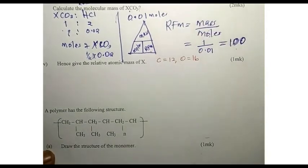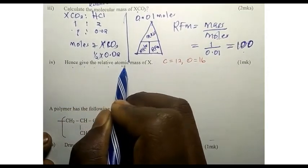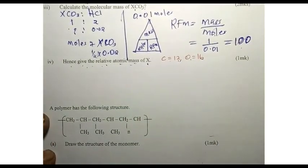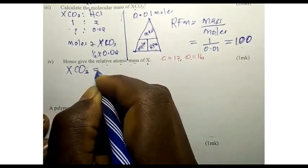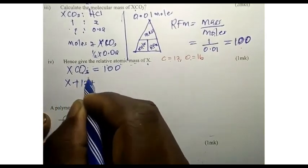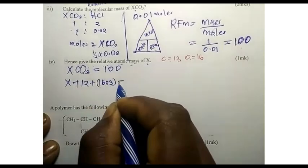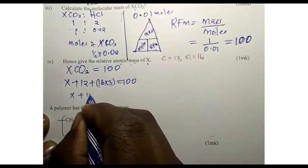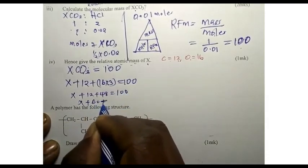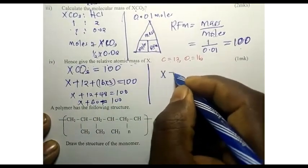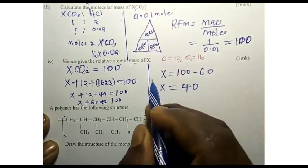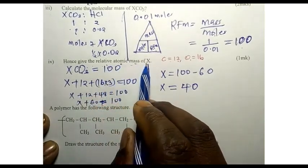Hence, give the relative atomic mass of X, given that carbon = 12 and oxygen = 16. X carbonate has RFM = 100, so X plus carbon (12) plus oxygen times 3 (48) equals 100. Therefore X plus 60 equals 100, which means X equals 100 minus 60 = 40. The relative atomic mass of X is 40.